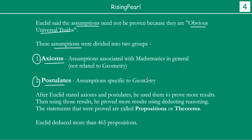Euclid had to do this because as he was writing the famous Elements, he was explaining everything and making assumptions along the way. He noticed that a lot of these assumptions were universal truths. He grouped them into two groups — axioms and postulates — and he used them to prove more results. Using those results, he proved even more results using deductive reasoning. The statements that were proved he called propositions, or what today we call theorems. He deduced more than 465 propositions or theorems for the first time.